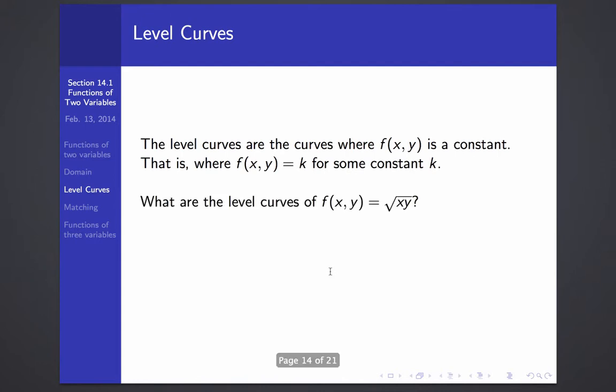So what are the level curves of f(x, y) equals the square root of xy? Well, for example, the curve where f(x, y) is 1 is the set of points where the square root of xy is 1. In other words, where x times y is 1 or y is 1 over x.